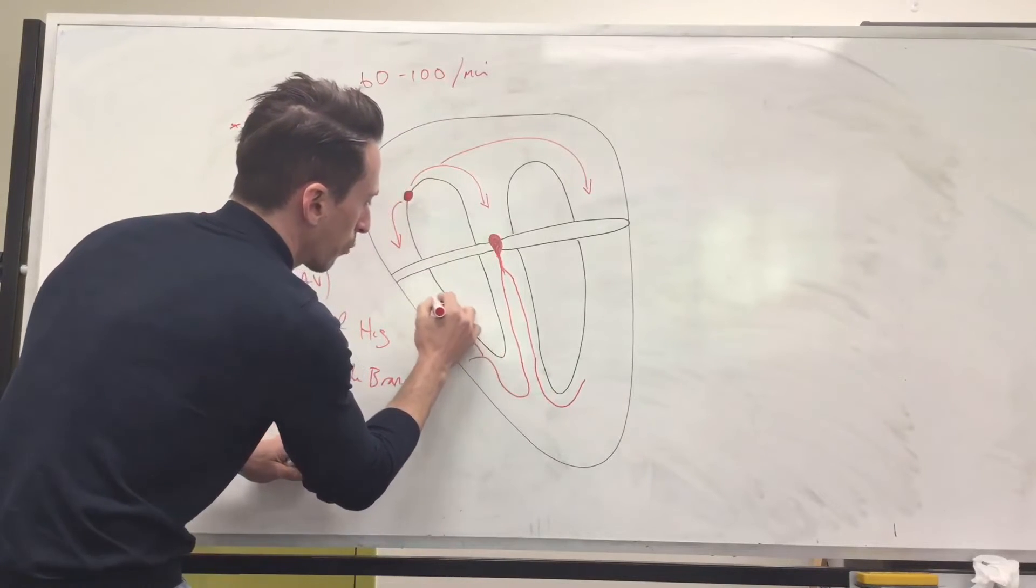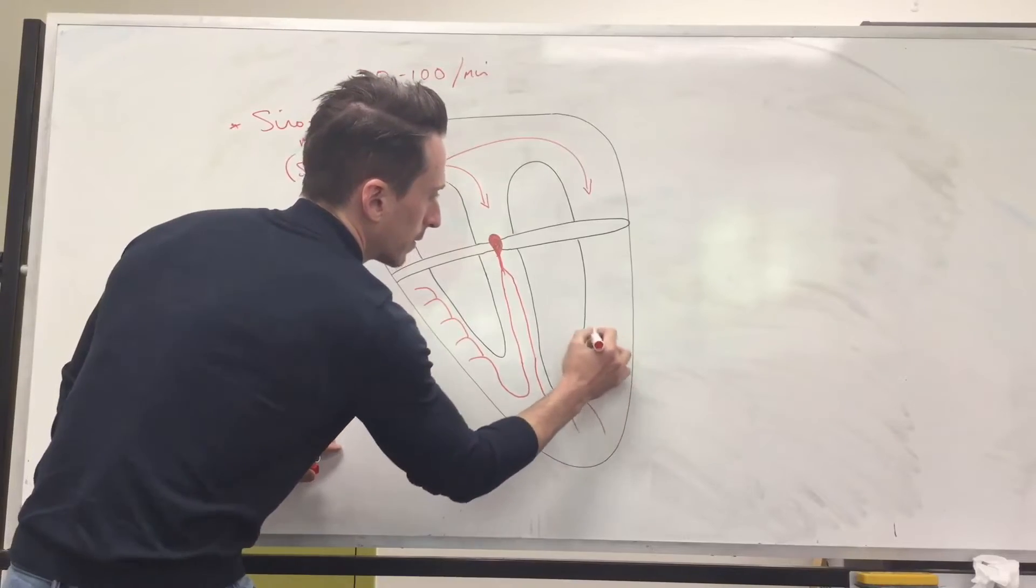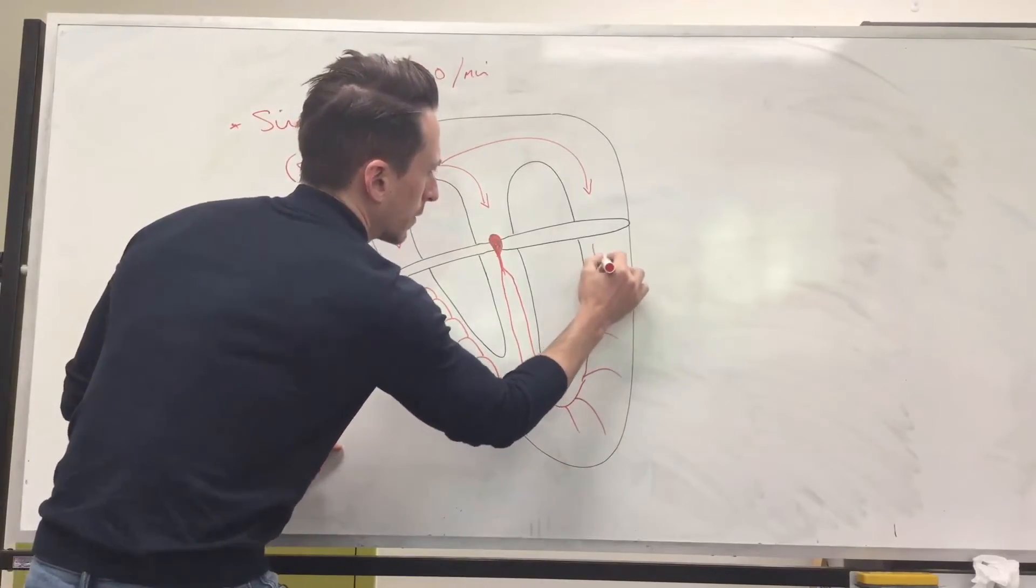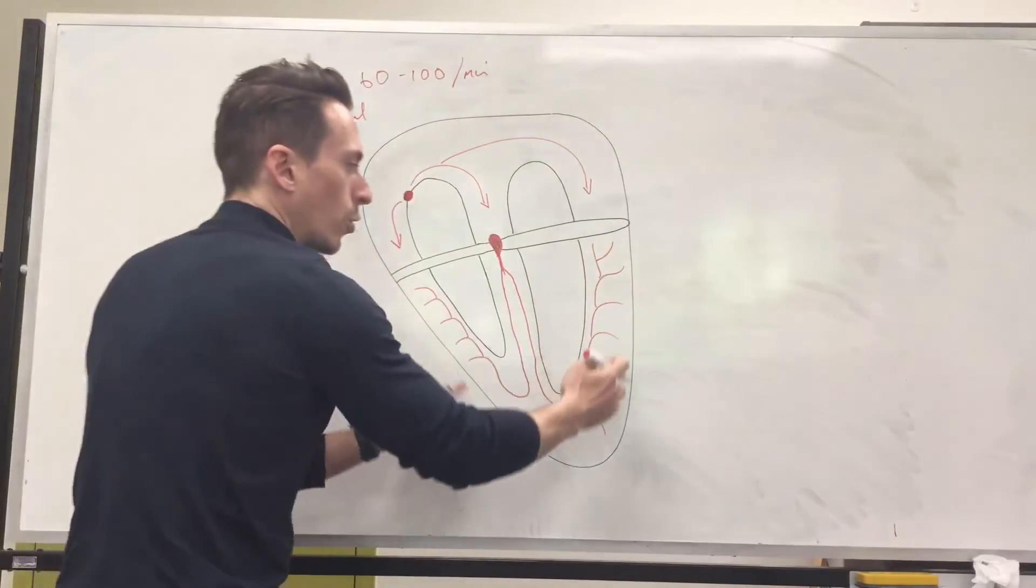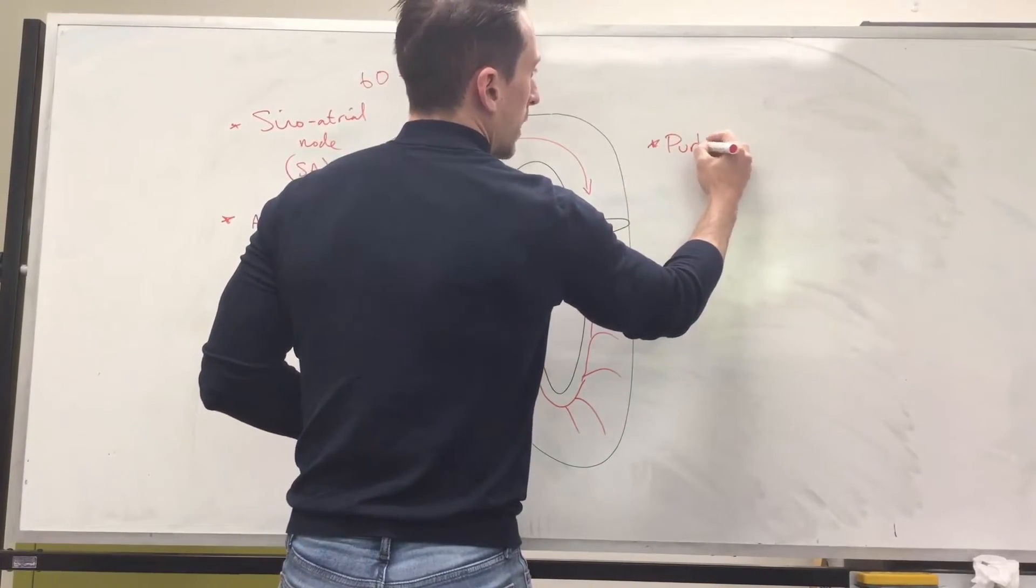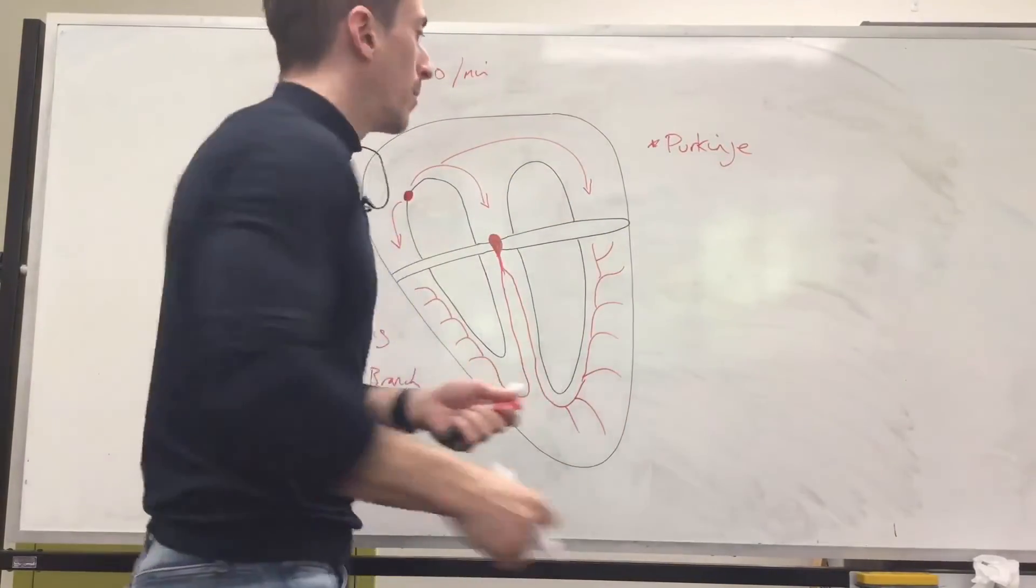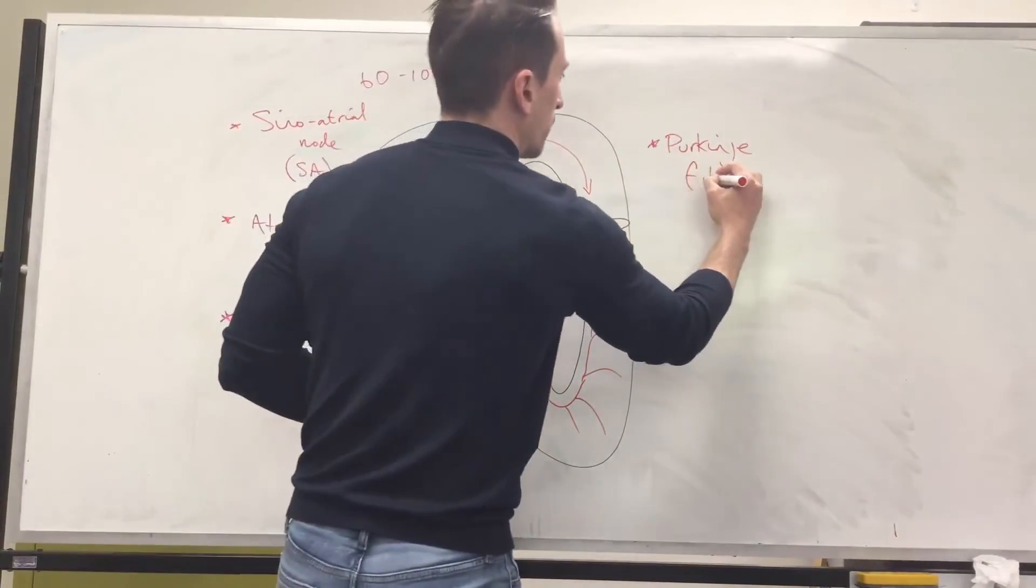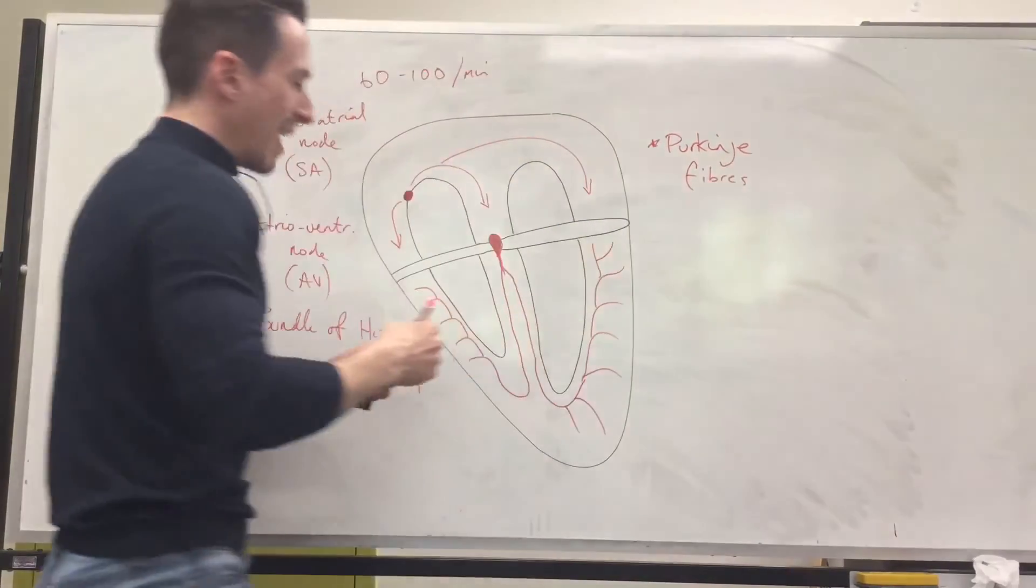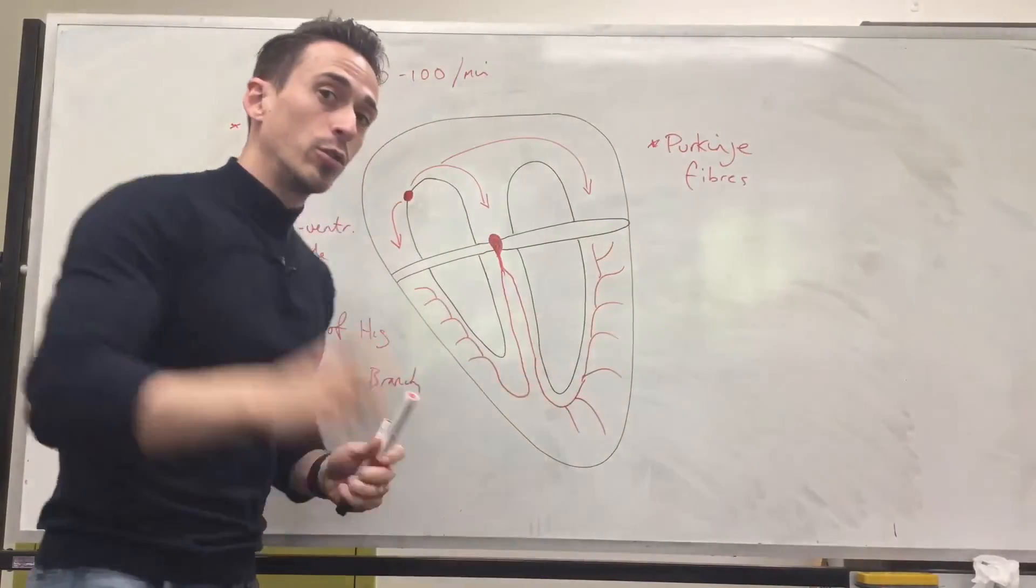And then you've got various branches going down like this. Okay. These are called Purkinje fibers. Again, Purkinje because it's named after some old dead white guy. But these are the Purkinje fibers.